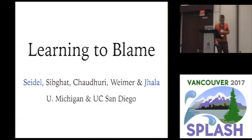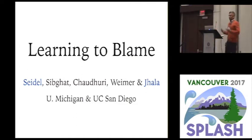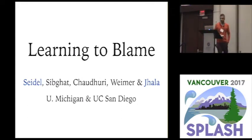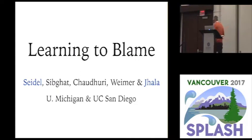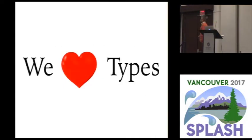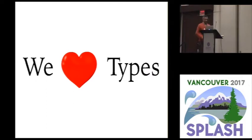I'm going to be talking about using machine learning for improving error messages, very much in the same spirit as the previous talk. Here's where I'm coming from: I love type systems, and I really, really like those type systems where I don't have to write down any types at all, where there's just a whole bunch of global inference and everything works just fine.